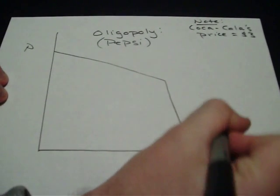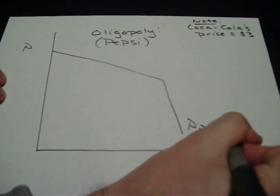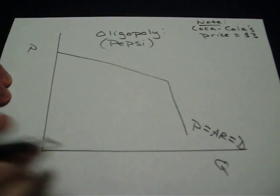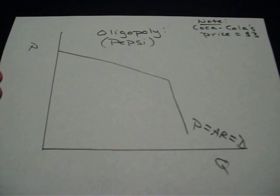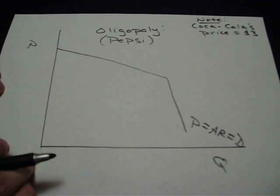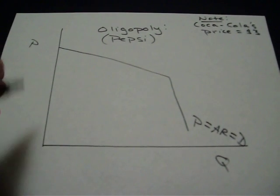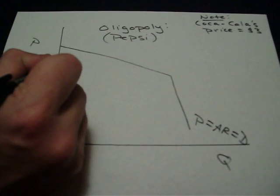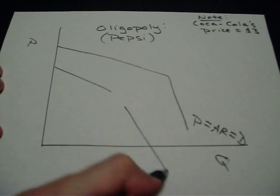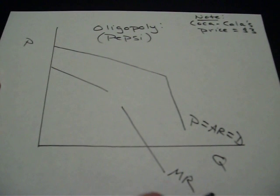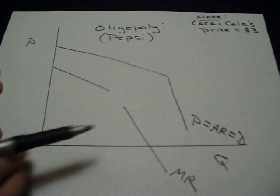So mathematically, this is our price line, it's our average revenue line, and it's also our demand line. The way that it works out mathematically is that marginal revenue is going to trail this, and it's going to be twice as deep. So marginal revenue, which can also go negative, would look something like that. There would be a gap in between.